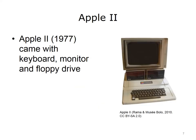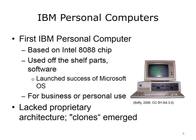It was followed by the Apple II in 1977, which came out with a keyboard, monitor, and floppy drive. The photo shows that it looks much more like the personal computers we know today. At the time that the Apple computers were becoming popular, IBM was watching very carefully and decided it wanted to get into this market as well. IBM knew that in order to be competitive, they had to be quick. They didn't have time to develop their own hardware and software, so instead, they used parts that were already available.